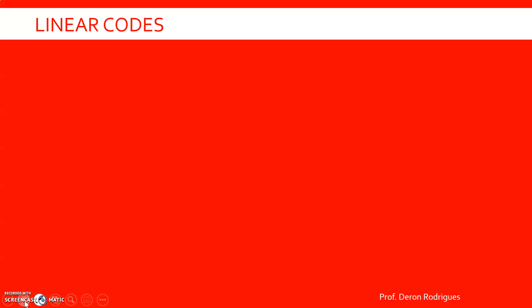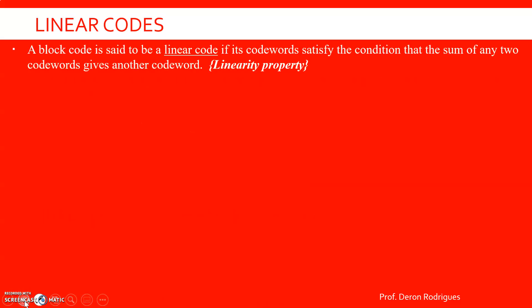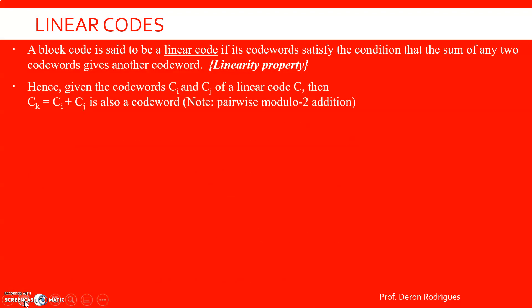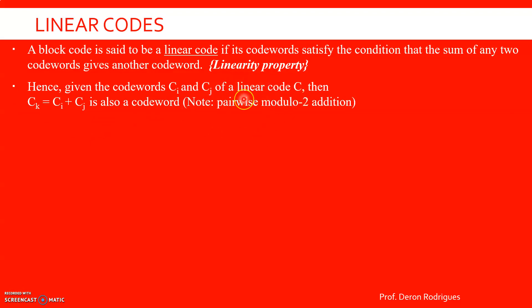So what are linear codes? The definition of linear block code is given as follows. A block code is said to be a linear code if its code words satisfy the condition that the sum of any two code words gives another code word. This is also called the linearity property. So let us consider a code C, where C_i and C_j are two code words belonging to code C. If I take the Modulo-2 addition of C_i and C_j, I get C_k, and if this C_k is also a code word belonging to code C, then the code is called a linear code.